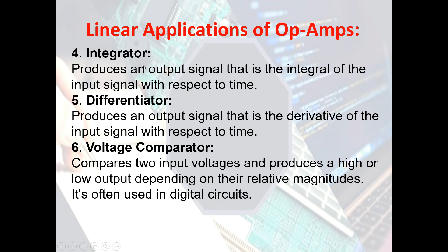The integrator produces an output signal that is the integral of the input signal with respect to time. We typically use sine wave and cosine wave to represent the integrator. The differentiator, on the other hand, produces an output signal that is the derivative of the input signal with respect to time. The voltage comparator compares two input voltages and produces a high or low output depending on the relative magnitudes, and it's often used in digital circuits.